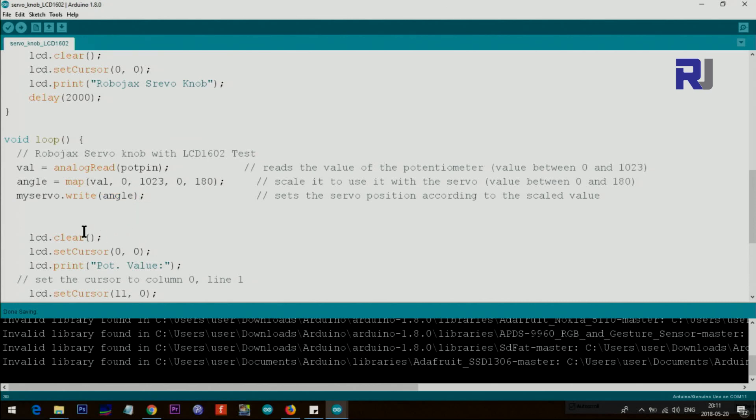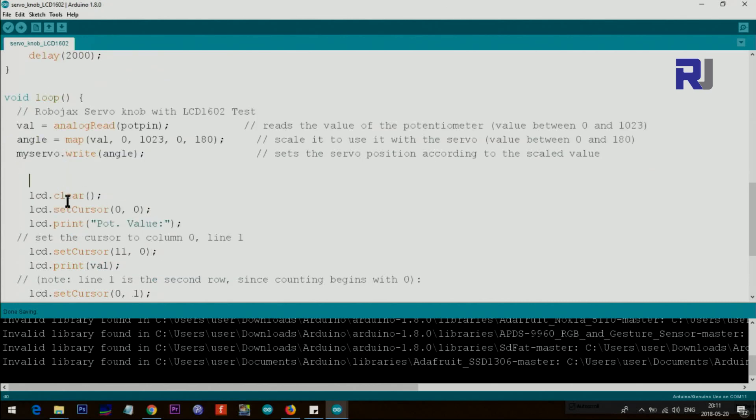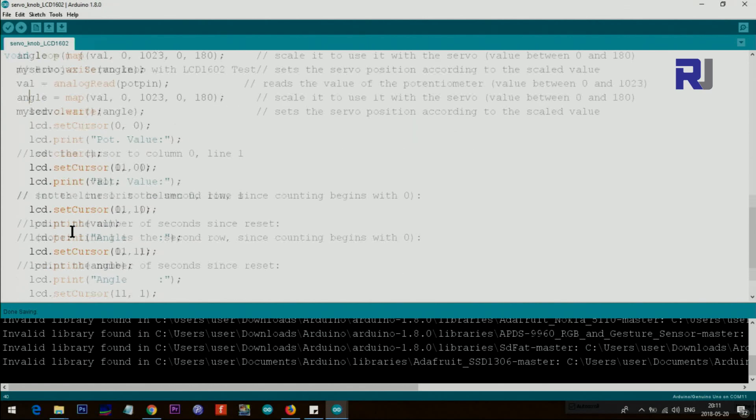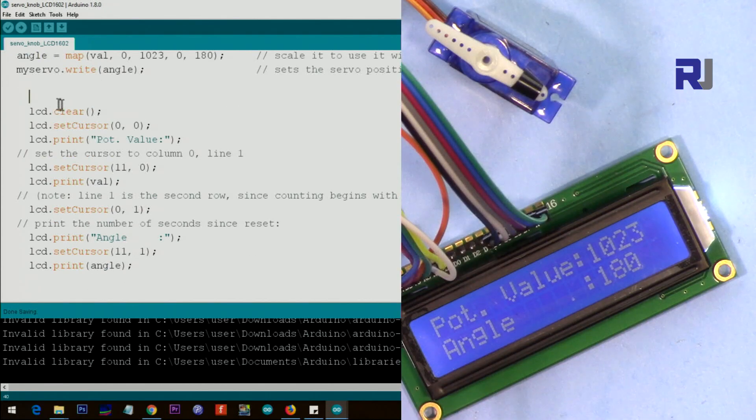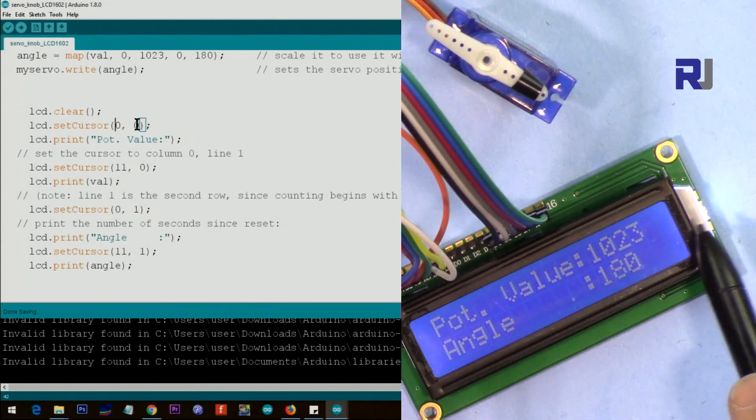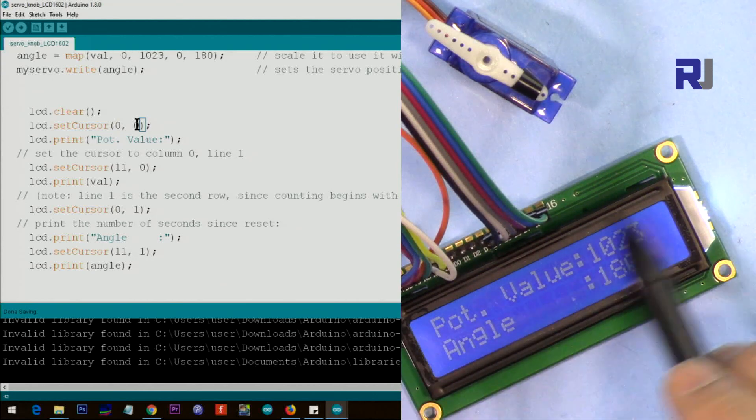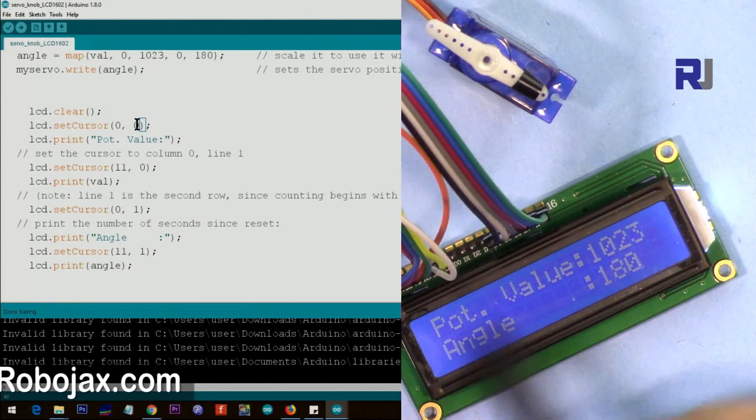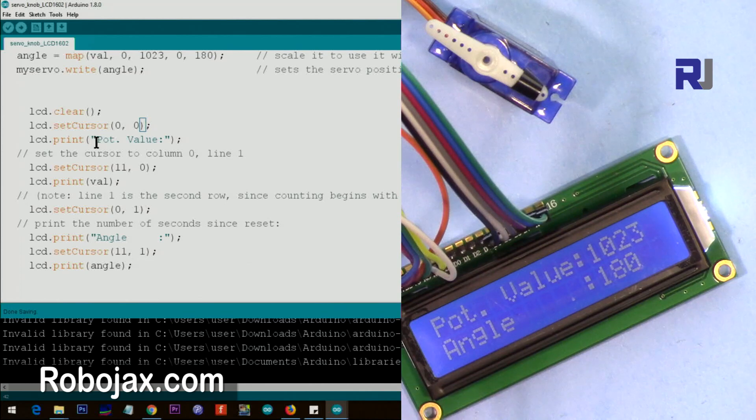So that location, this portion is for the LCD. From here to here, this portion is for the LCD. Here we say clear. It clears whatever was written here before. Then we say set cursor at 0,0. 0,0 means set it at character 0 of line 0. This is line 0, that's line 1, and that's character 0, 1, 2, 3, up to 15, which is 16 characters. And then we print this 'Pot,' which means potentiometer value up to here.